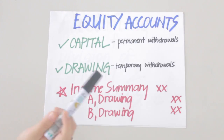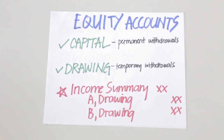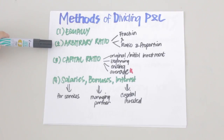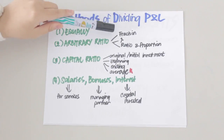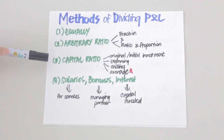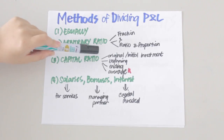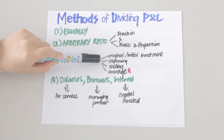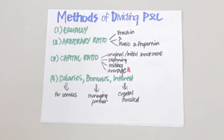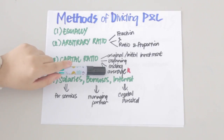The tricky part is determining how much a partner's share should be. There are different methods of dividing profits and losses among partners. One way is to divide income equally; another is through the use of an arbitrary ratio, which can be in the form of fractions, percentages, or ratio and proportion. You can also use the capital ratio, which could be based on original or initial investment, beginning capital balance, ending capital balance, or average capital balance — the most equitable of these being the average capital balance.